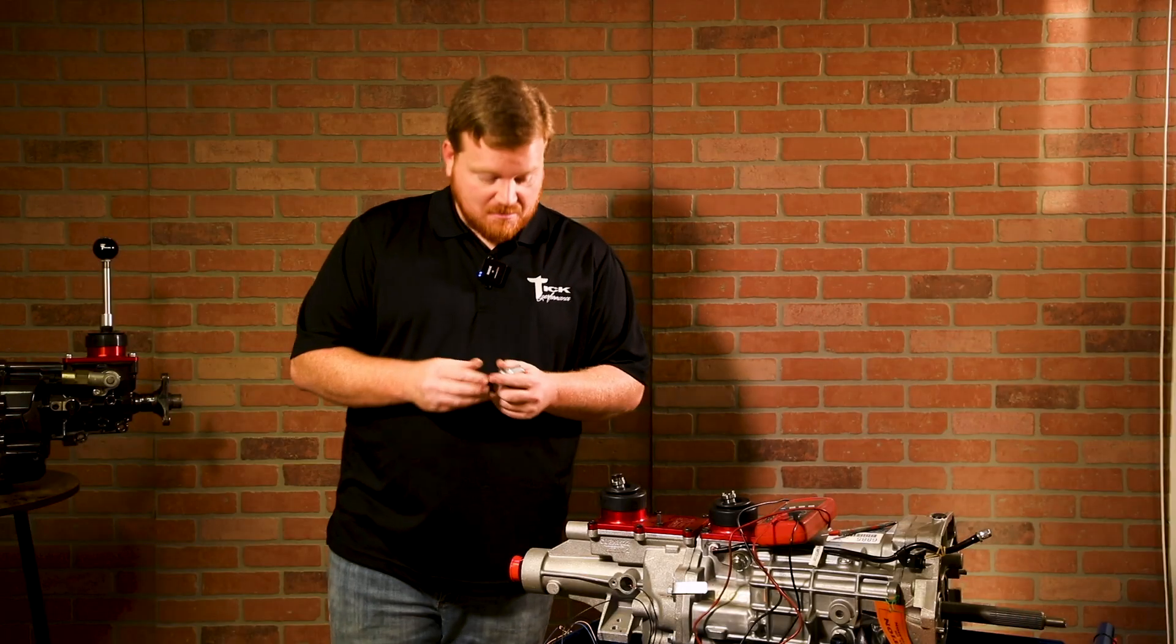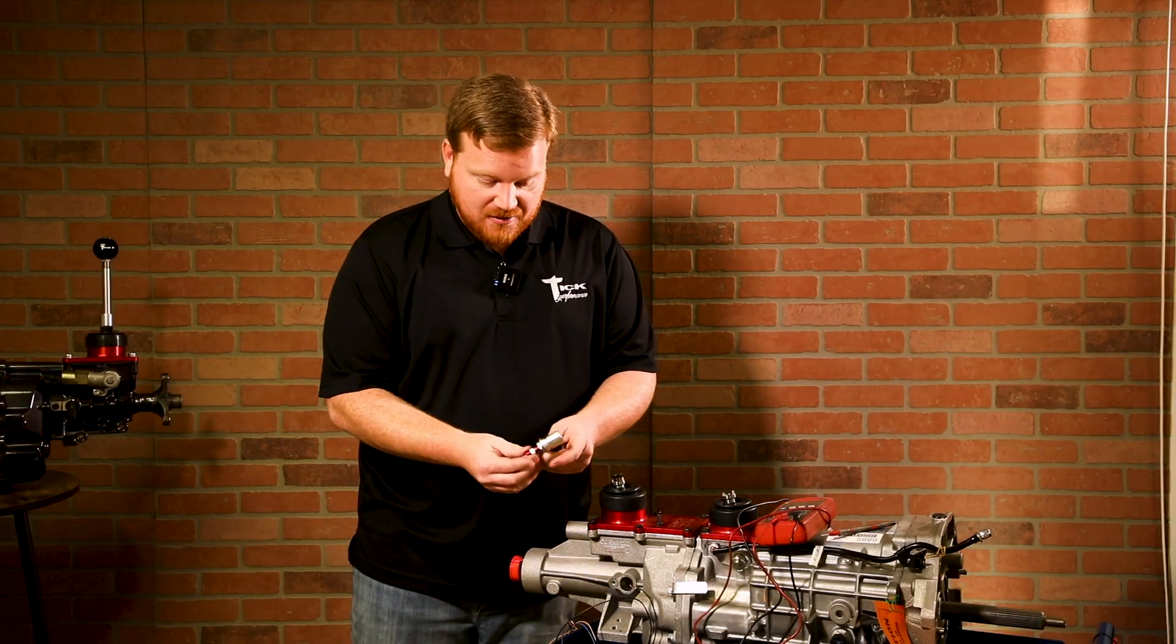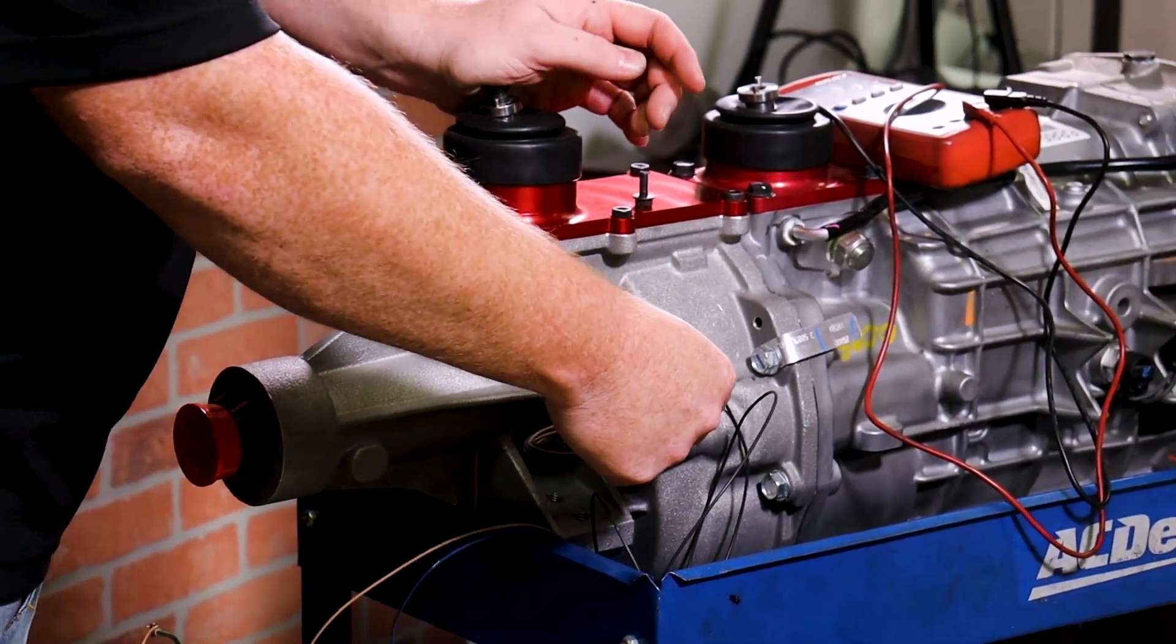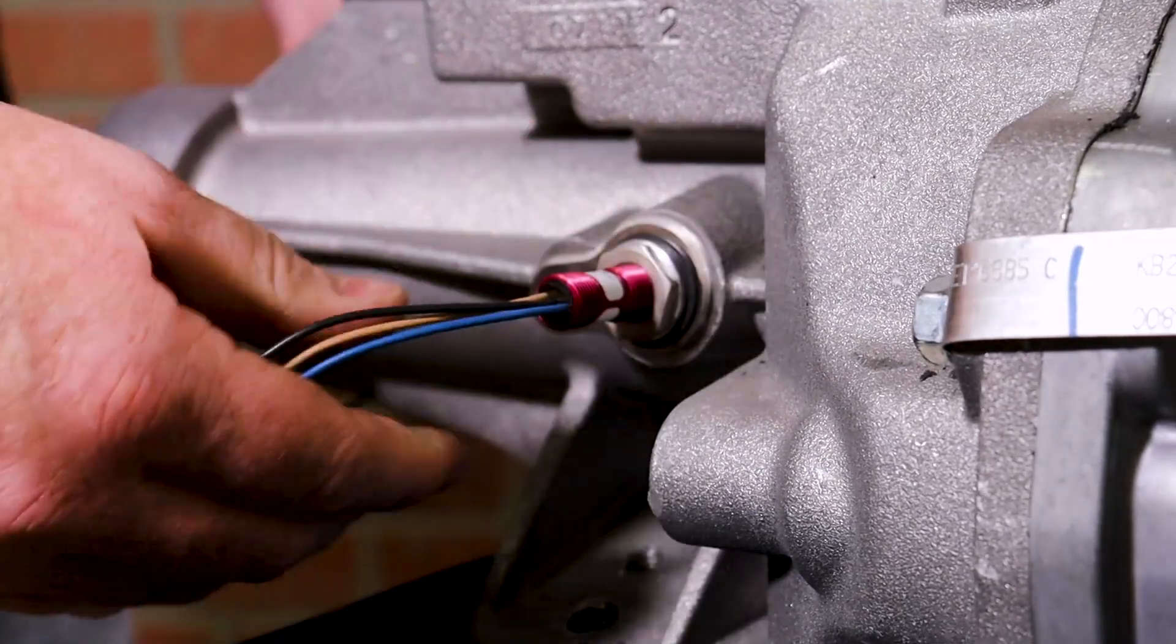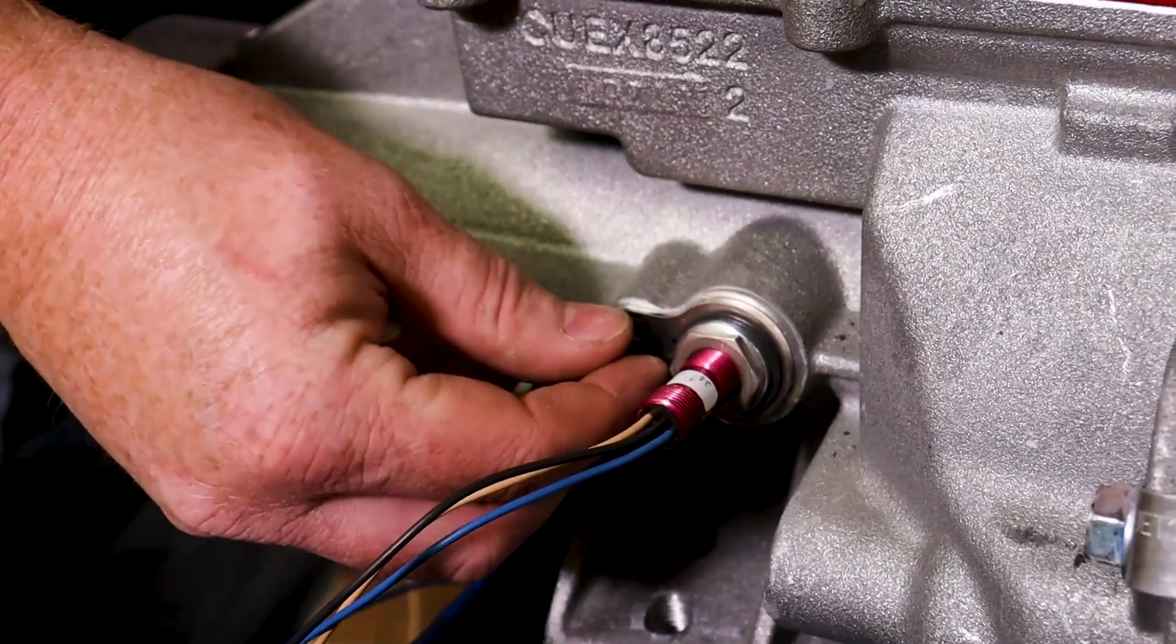Pretty simple. You're just going to unbolt the factory sensor. It's a single bolt. You're going to pull it out and then you're just going to put this sensor in and install the bolt back. So installation process for there is pretty simple.